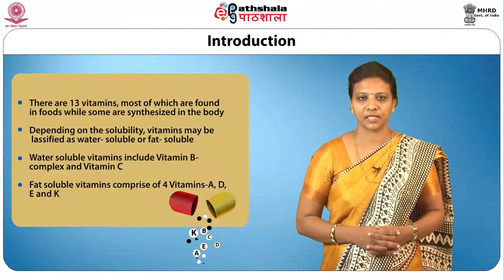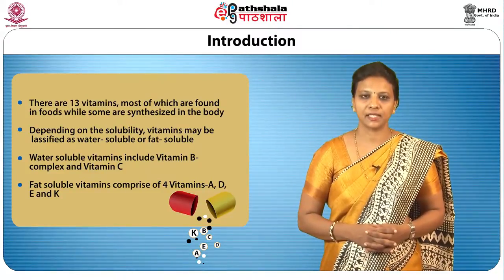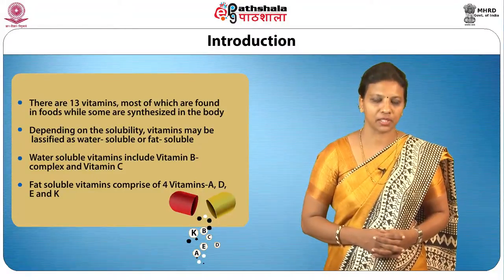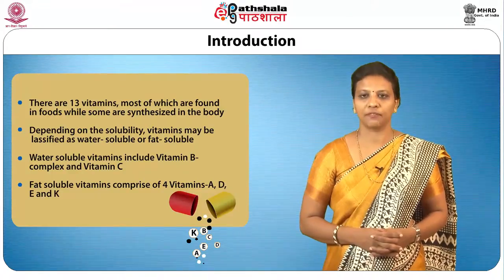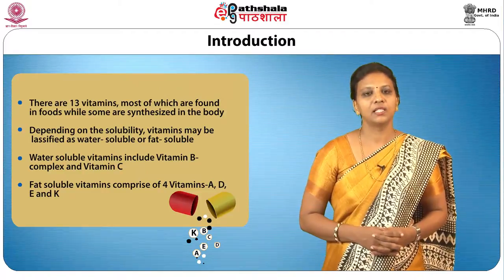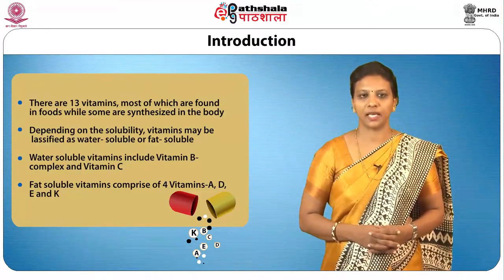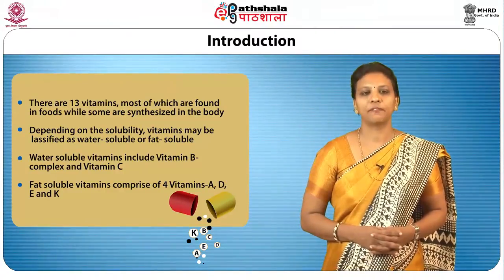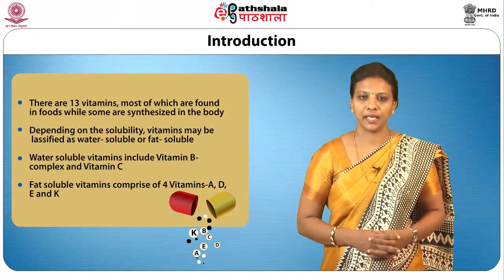The essential nutrients consist of carbohydrates, proteins, fats, vitamins, minerals and water. The focus of this session is on Vitamin A — its history, structure, chemistry, dietary sources, distribution and absorption. Vitamins are a group of organic substances occurring in many foods in small amounts, necessary in trace amounts for the normal metabolic functioning of the body. They act as coenzymes and regulators of metabolic processes. There are 13 vitamins, most of which are found in foods while some are synthesized in the body. Depending on solubility, vitamins may be classified as water soluble or fat soluble. Water soluble vitamins include vitamin B complex and C, while the fat soluble vitamins comprise four vitamins: A, D, E and K.